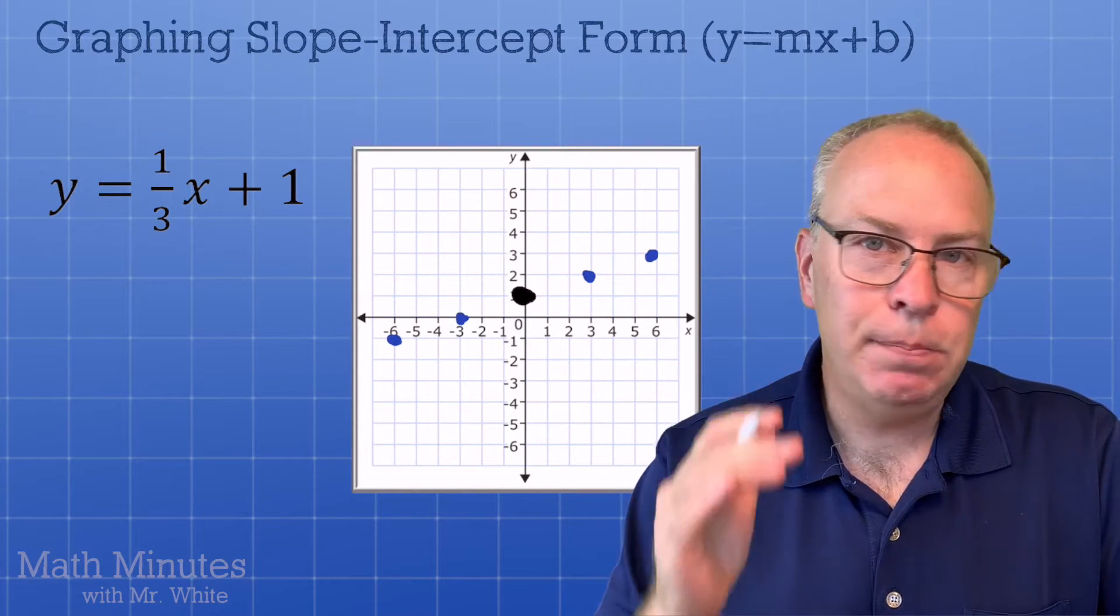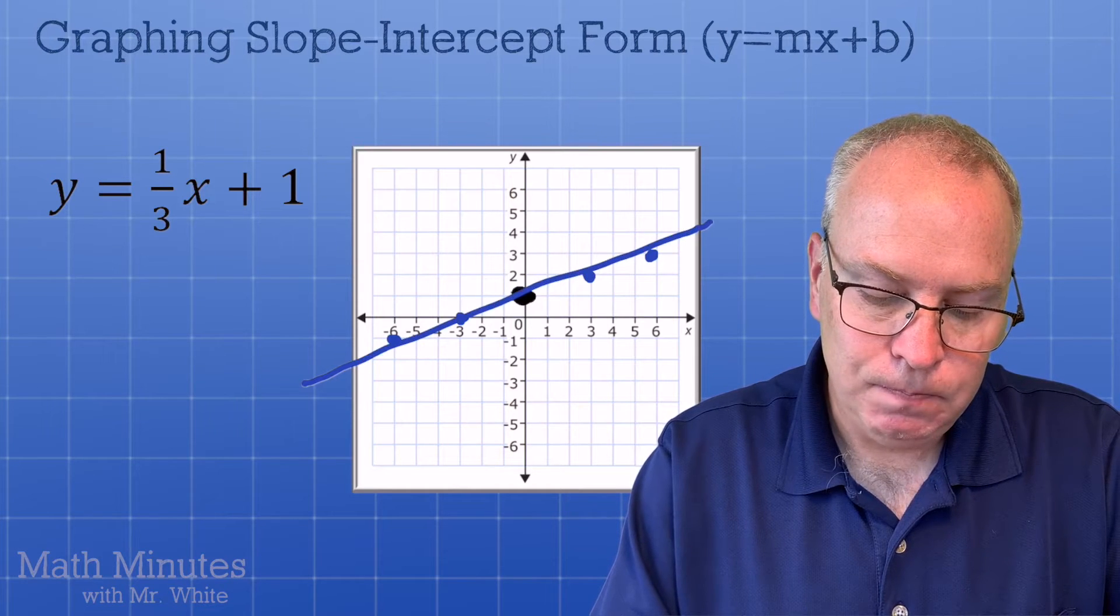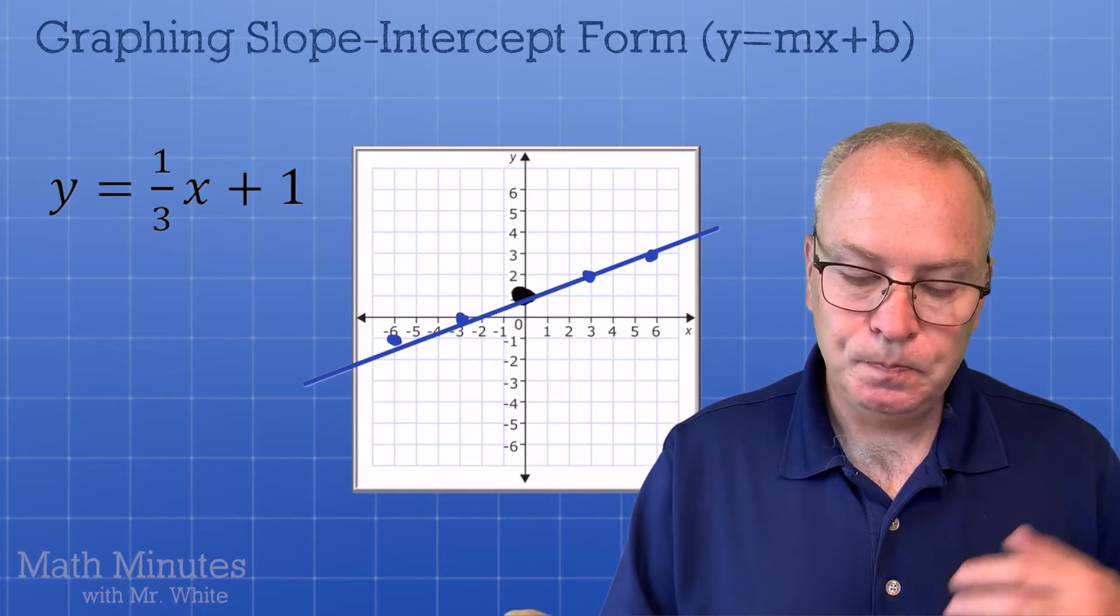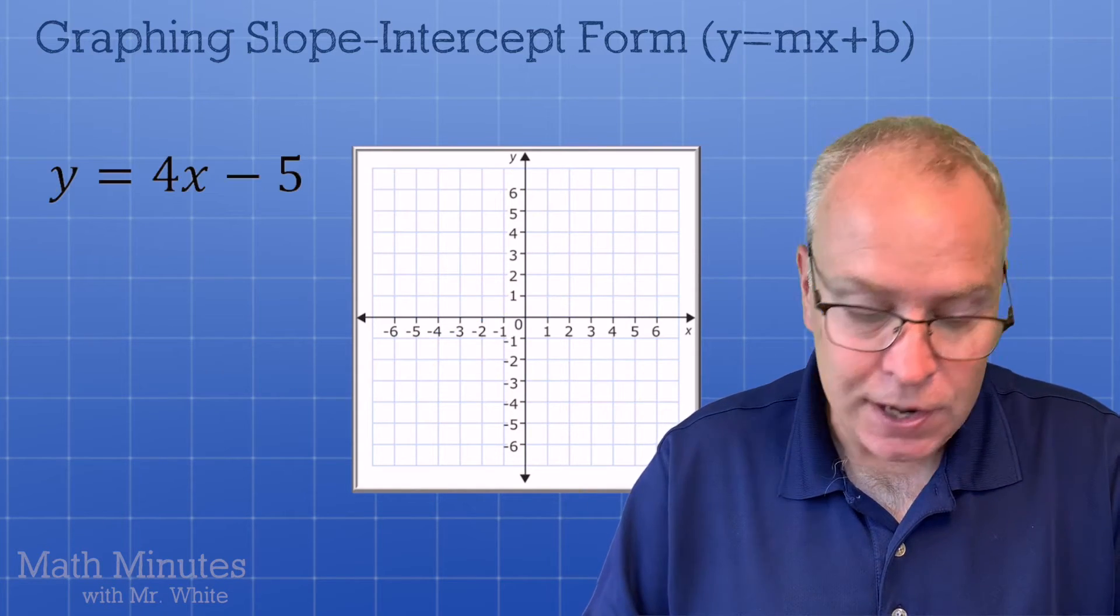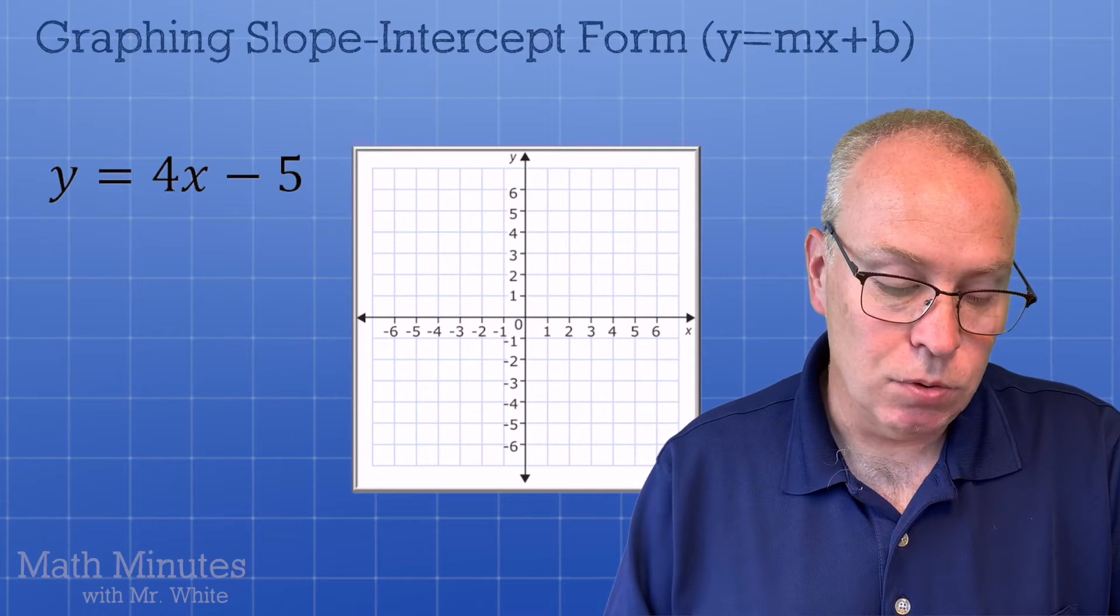Notice how they form an absolutely perfect line. So I'm going to draw a perfect line that goes through those dots. There they are. Okay, let's look at a third example with a positive slope. And then we're going to talk about negative slopes.